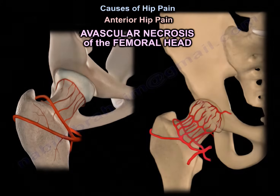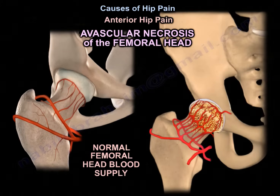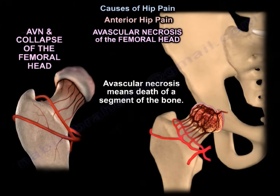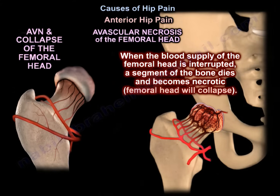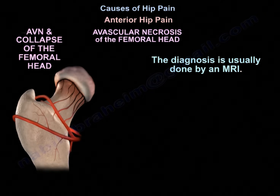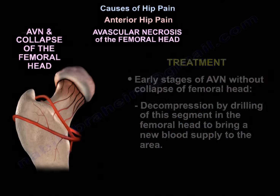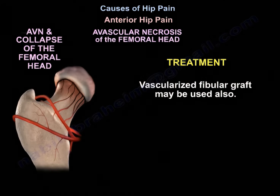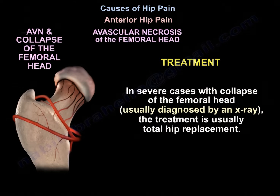Another cause of anterior hip pain is avascular necrosis of the femoral head. Here you can see the normal blood supply of the femoral head — it's very tenuous and precious. Avascular necrosis means death of a segment of bone; when the blood supply is interrupted, a segment dies and becomes necrotic, and the femoral head will collapse. Diagnosis is by MRI. In early stages without collapse, treatment involves decompression by drilling the affected segment to bring new blood supply to the area. In severe cases with collapse, usually diagnosed by x-ray, the treatment is total hip replacement.